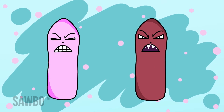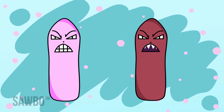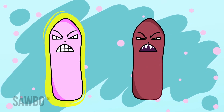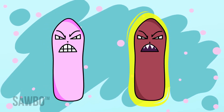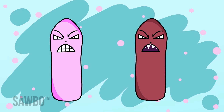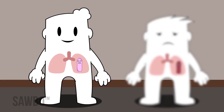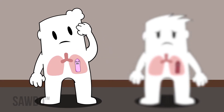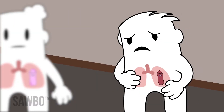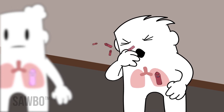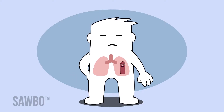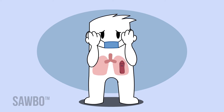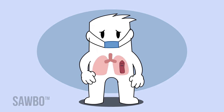TB can be either latent or active in your body. This character represents latent TB bacteria. This character represents active TB bacteria. In its latent form, a person carries this bacteria but will not infect other people unless it becomes active. In its active form, the bacterium spreads from person to person through the air. This animation describes ways to effectively manage active TB if you do become infected.